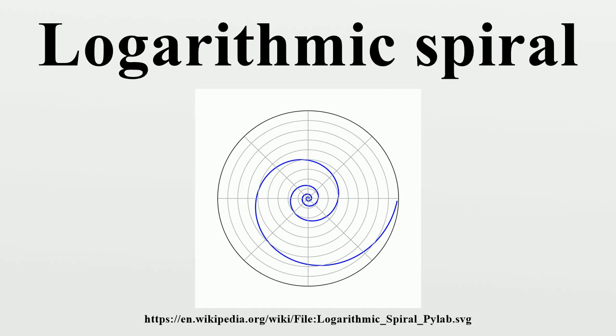The logarithmic spiral was first described by Descartes and later extensively investigated by Jacob Bernoulli, who called it spira mirabilis.